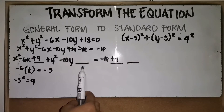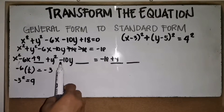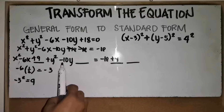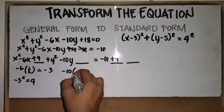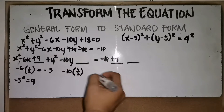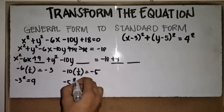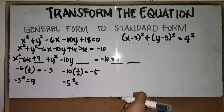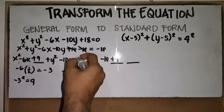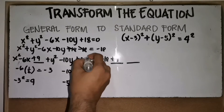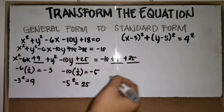Next, for the coefficient of y: the coefficient of y is negative 10. One-half of negative 10 is negative 5. Negative 5 squared is 25. So positive 25 will be written here on the left side. What is written on the left side should also be written on the right side.